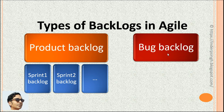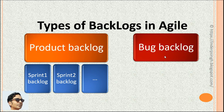The Bug Backlog can be a separate backlog. By having a separate Bug Backlog, the Product Owner can prioritize bug fixes. A separate Bug Backlog keeps the Product Backlog cleaner and provides visibility of bug fix statuses. However, the problem is that a separate Bug Backlog means more overhead work for the team.